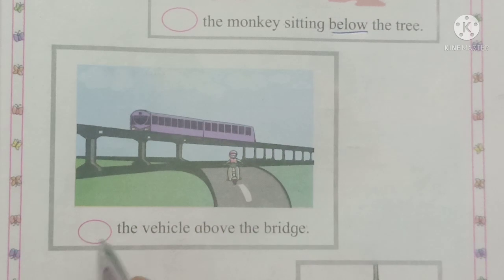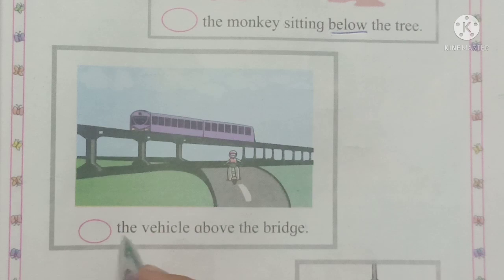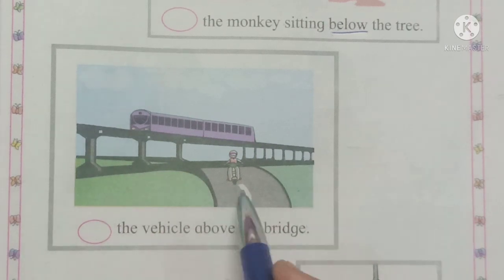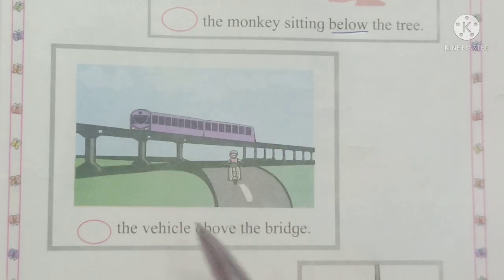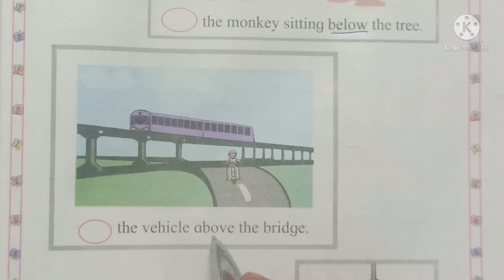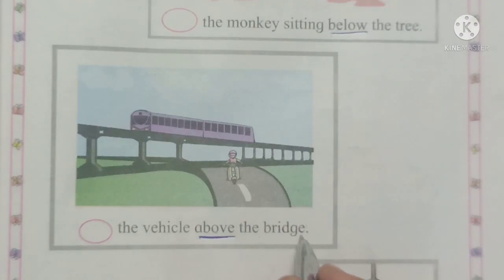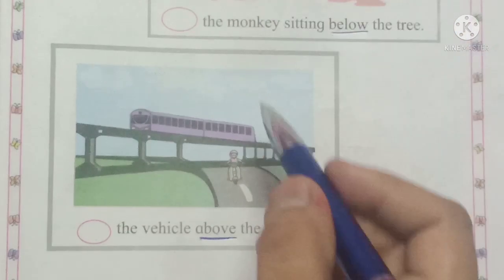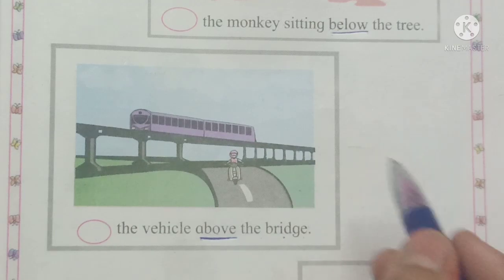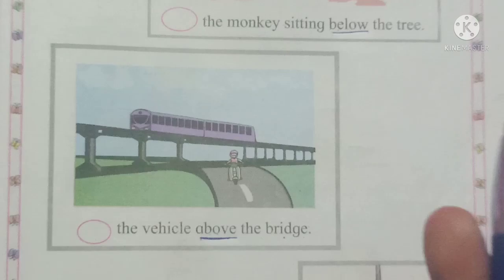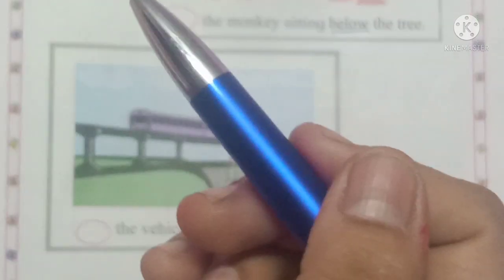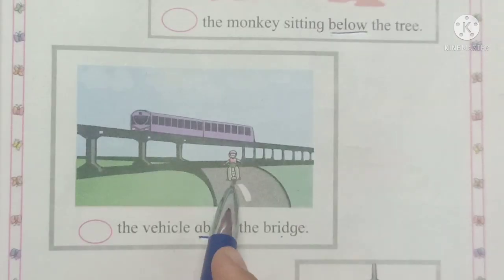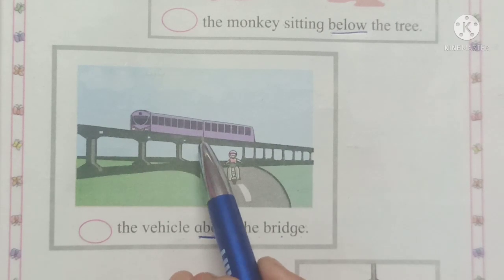Circle the vehicle above the bridge. Vehicle means 'वाहन'. We have to circle the vehicle above the bridge. Above means 'वर'. Bridge means 'पूल'. The vehicle that is above the bridge — we have to circle that vehicle. Tell me students, which vehicle is above the bridge? Is this one? No. Is this vehicle above the bridge?